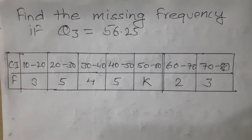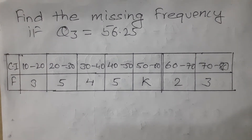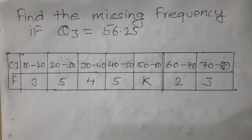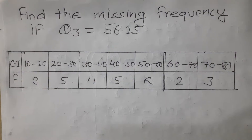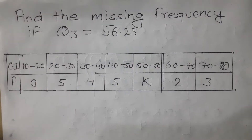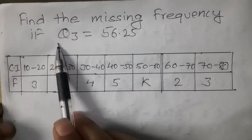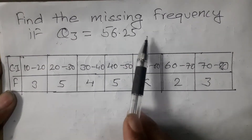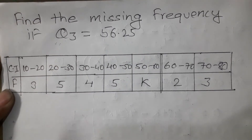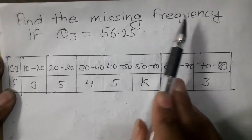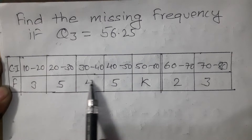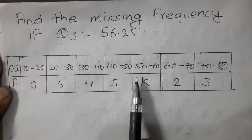Hello friends, welcome to my channel Online Math Class Nepal. The question here is about quartile 3 in statistics. Find the missing frequency if Q3 equals 56.5. The missing frequency is represented by an unknown, and some frequencies are given as numbers while one is an unknown value k.